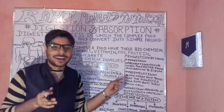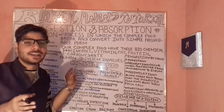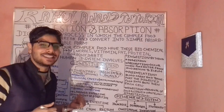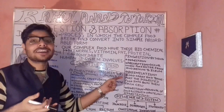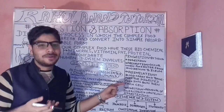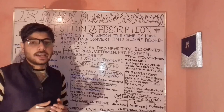Absorption will occur when food enters from the duodenum towards the ileum. Let's understand with reference to the structure — the duodenum as well as the ileum. These play an important role, and when our food descends from the duodenum towards the ileum region, it comes under absorption.